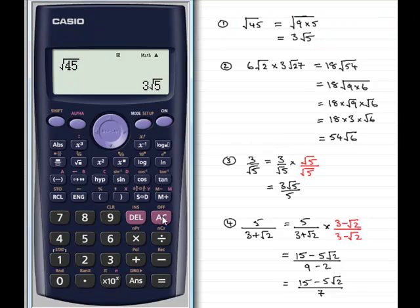For question number 2, 6 root 2, so we'll type that in, 6 root 2, move the cursor to the end. And then it's times 3 root 27, so 3 square root 27. Press equals and rather than doing that long calculation that I did, you end up with the 54 root 6. So how easy is that?